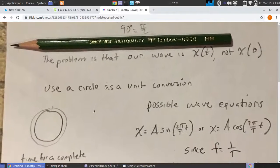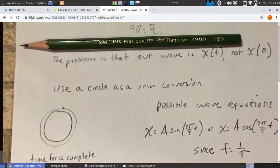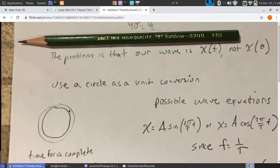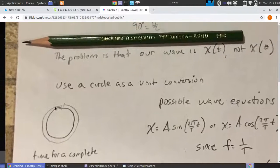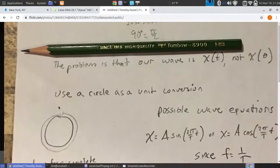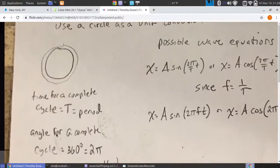The way you do this is to treat the circle as a unit conversion. If we're trying to turn time into angle, we know the time it takes to go around a circle is the period, and the angle to go around is 2π or 360 degrees.